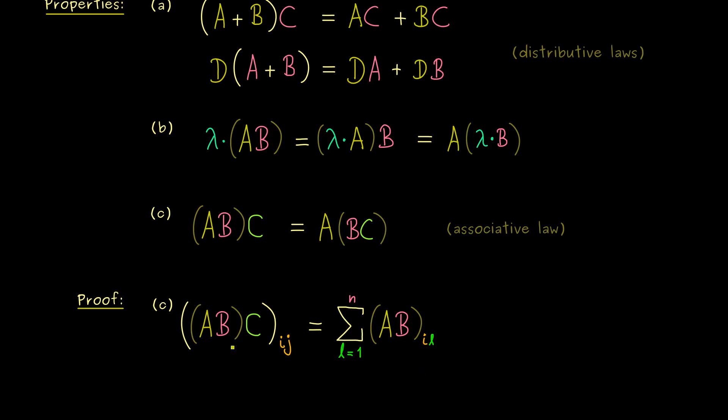Hence, first this matrix here, with the entries I, L. Times the entries of the matrix on the right hand side, given by C, L, J.